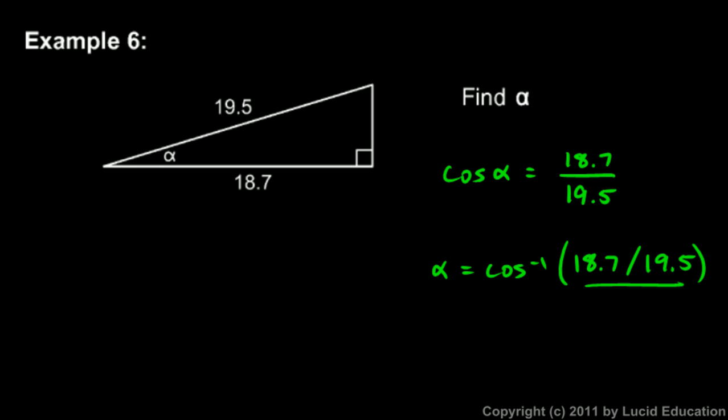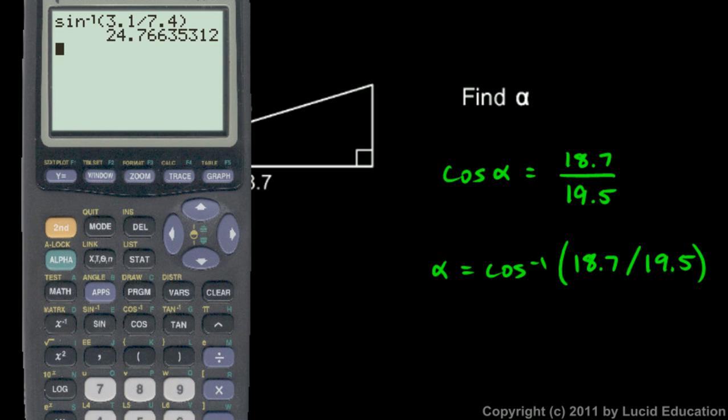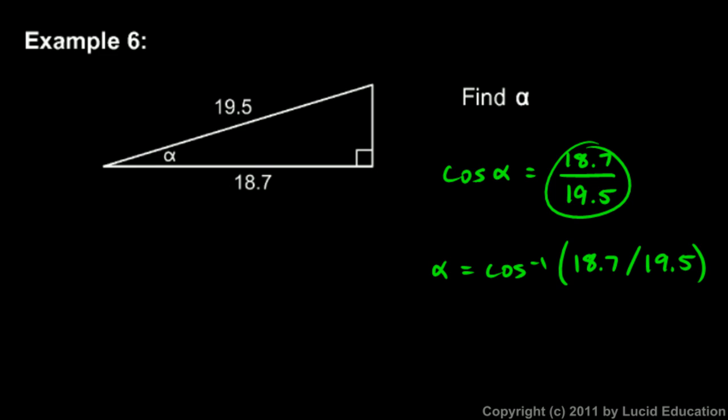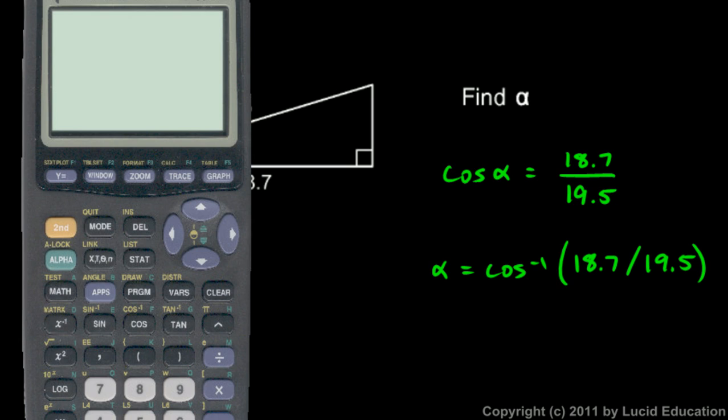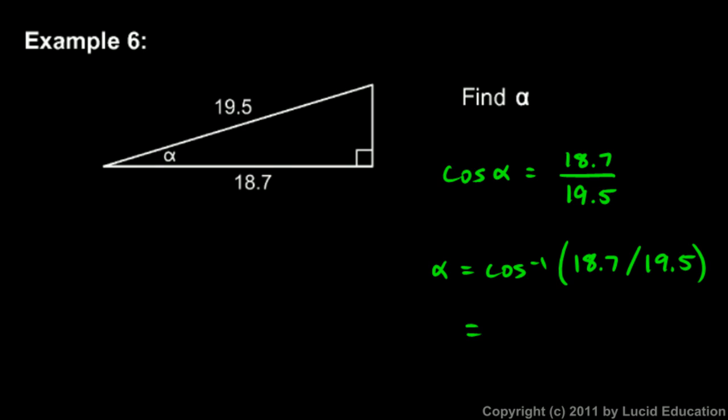Sometimes you see people write it that way because on these calculators, which are fairly common, that's how it looks. Although writing it as a fraction with the above and below is more standard practice. But anyway, let's put this in. Inverse cosine of 18.7 divided by 19.5 gives us our answer: 16.47 degrees. So alpha is 16.47 degrees.